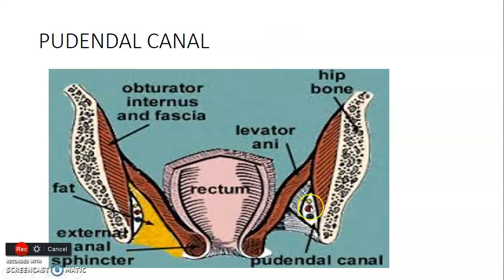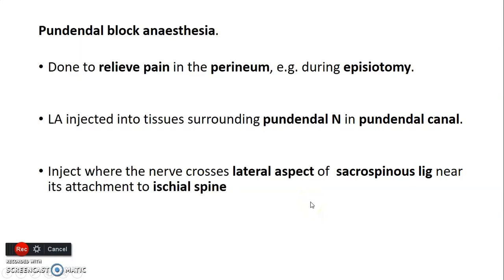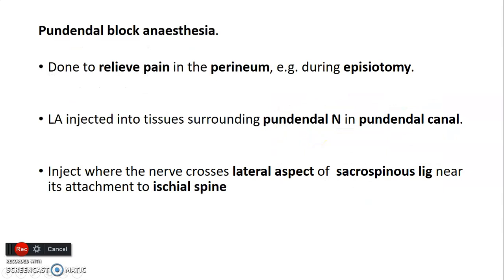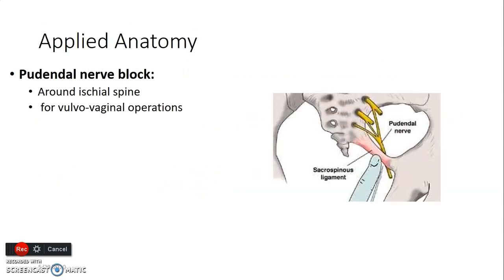The pudendal canal is on the lateral wall of the ischioanal fossa and contains branches of pudendal vessels and the pudendal nerve. A pudendal nerve block is offered here to relieve pain in the perineum during episiotomy or other perineal operations. A local anesthetic is injected around the tissues surrounding the pudendal nerve in the pudendal canal, usually at the lateral aspect of the sacrospinous ligament near the attachment of the ischial spine — that is where the pudendal nerve courses.